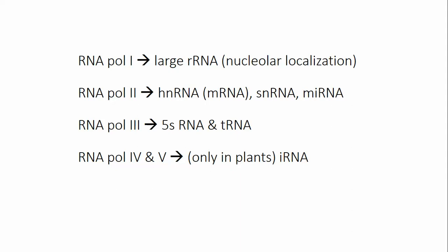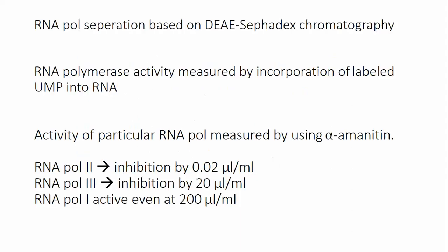RNA Polymerases IV and V are only present in plants, and these actually transcribe interference RNA. To isolate the different types of RNA polymerases, they can be separated based on DEAE-Sephadex chromatography.